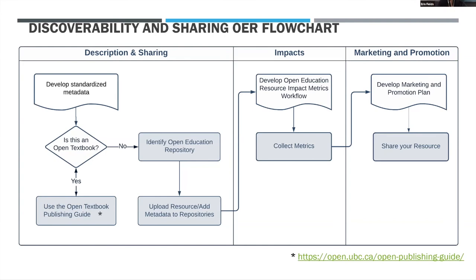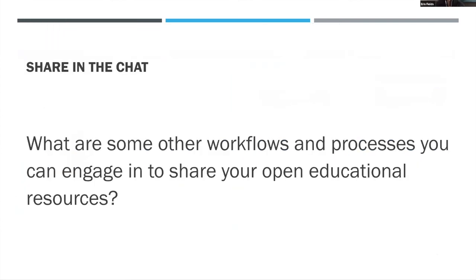To summarize the overall flow of discoverability and sharing: the description and sharing phase involves developing standardized metadata — with a different system for open textbooks. For other OERs, standardize metadata, select repositories for hosting and sharing, make decisions on metrics to gather, collect those metrics, and develop a marketing and promotion plan so that the metrics — and use of your objects — will increase.